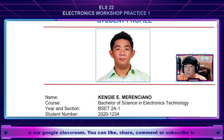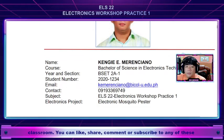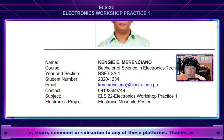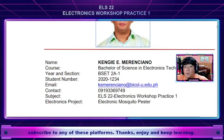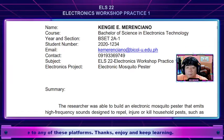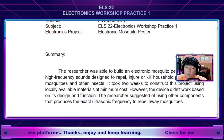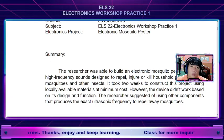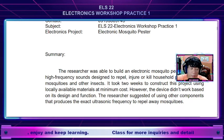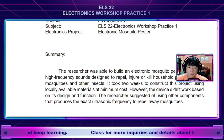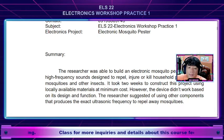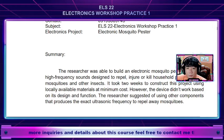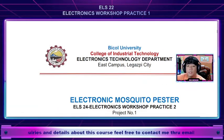On this first page, you'll see the details of the proponent. It includes the picture of the proponent, the course, section, student number, email, contact information, the subject, and the project that he or she was able to build. It also includes a summary of how the proponent or maker was able to develop the project from scratch. This is the content of the first part of the technical report.